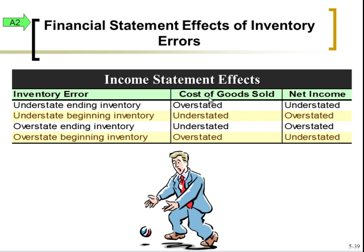Cost of goods sold has an inverse effect on net income: if you overstate cost of goods sold, net income is understated. So if we understate ending inventory, we overstate cost of goods sold and understate net income. Conversely, if we overstate ending inventory, it looks like a lot is left on the shelf, so we must not have sold much — we understate cost of goods sold and overstate net income.